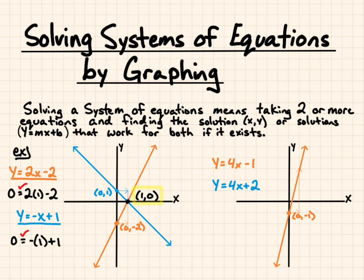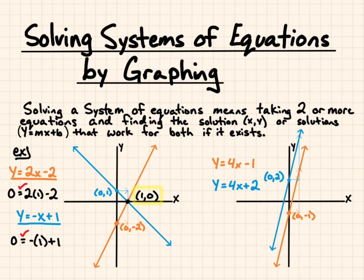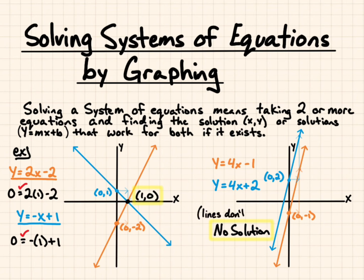For our second line, we'll start at the y-intercept at 2, with the same slope of 4 — every 1 positive in x, we go up 4 in y. Looking at both lines, we see that they never cross. If they never cross, the solution doesn't exist — we say no solution, meaning the lines are parallel and don't cross.